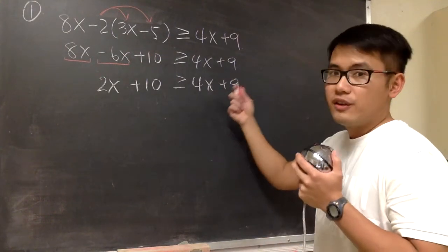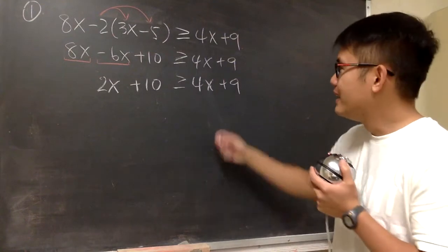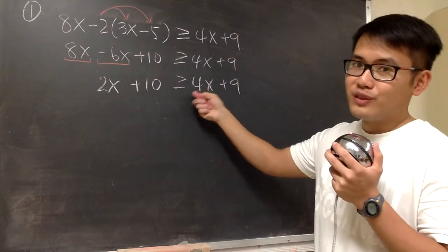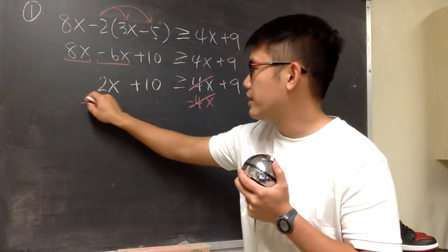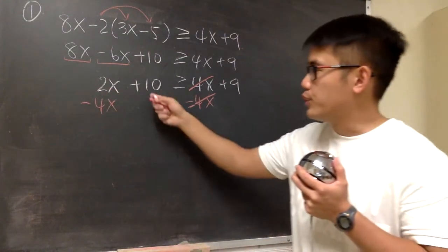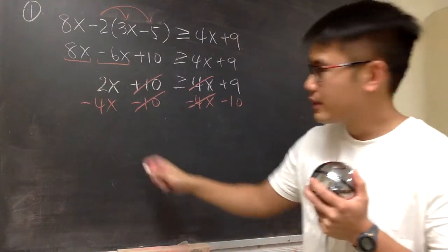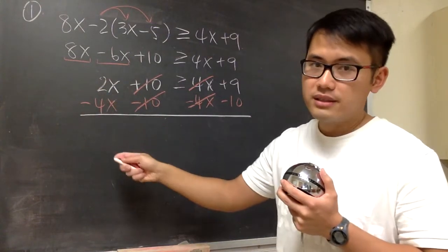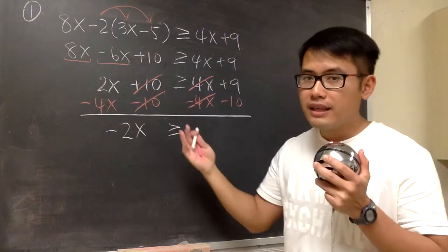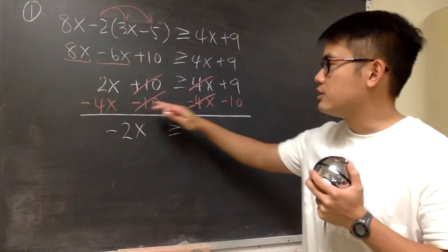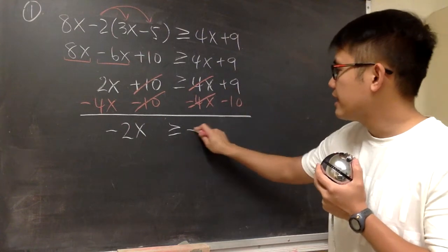Now, move the x from the right-hand side to the left-hand side, and the number from the left-hand side to the right-hand side. We subtract 4x from both sides so that the 4x cancels. We also subtract 10 from both sides so that the 10 cancels. It was just subtracting, so we maintain the inequality symbol.